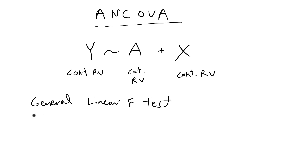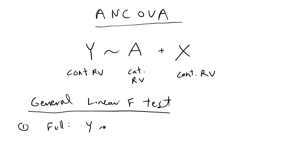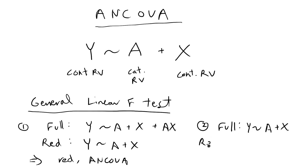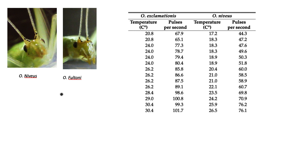The F-tests I perform are called the general linear F-test, used to compare full and reduced models. In the first step, the full model is y regressed on a, x, and a×x (interaction), compared to the reduced ANCOVA model of y on a and x — you want the interaction to be not significant. In the second step, the full model is the ANCOVA model (y on a and x) compared to a reduced simple linear regression of y on x only — here you want a significant result, confirming the ANCOVA model is appropriate.